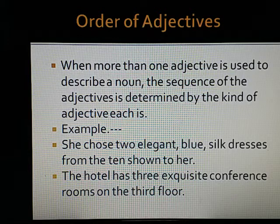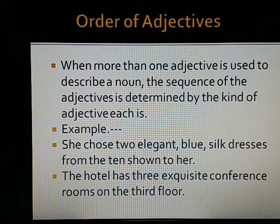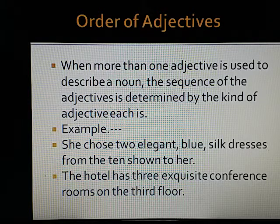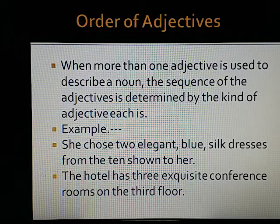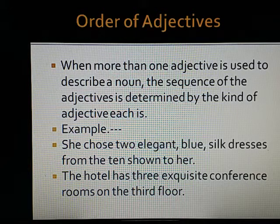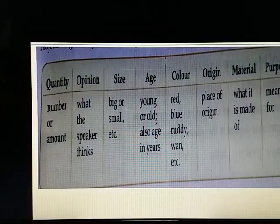When more than one adjective is used to describe a noun, the sequence of the adjectives is determined by the kind of adjectives. Sometimes, when we want to give a detailed or vivid description of something, we use two or three adjectives in a row. When we group adjectives in such a way, there is a set order in which these adjectives occur. Depending on their type or function, usually the adjective order is: opinion, size, age or temperature, shape, color, origin, material and purpose.